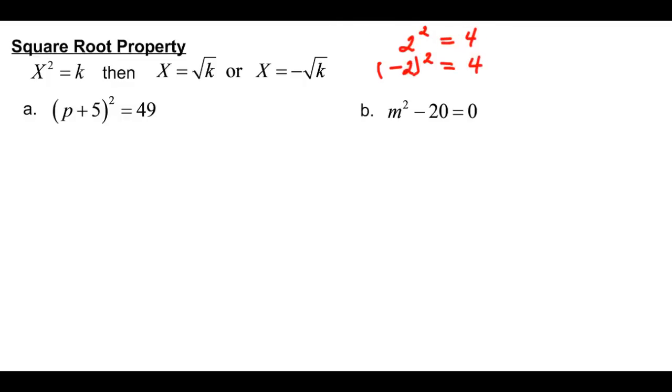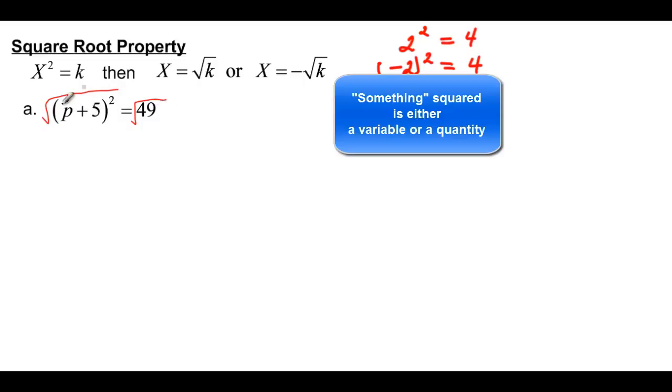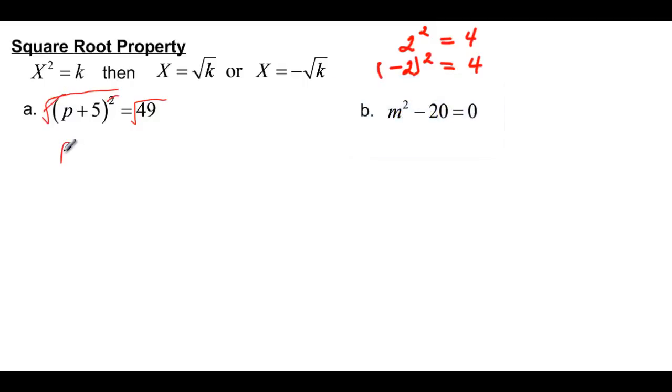Now if you remember, we talked about the fact that it was something squared. So what we're really doing here is taking the square root of both sides. This something squared is literally a something squared, it's a binomial squared. But a square root and a square cancel each other out, they're opposite functions, so that just leaves us with p plus 5. And then we have plus or minus the square root of 49, which will be plus or minus 7.